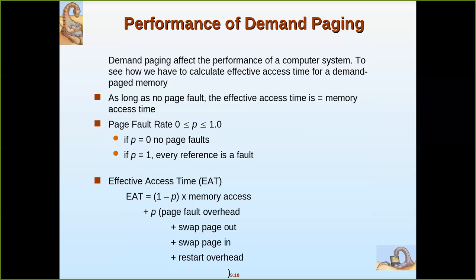Each time a page fault takes place, the page must be loaded from secondary storage into main memory, which definitely slows down the performance of demand paging. More page faults means reduced efficiency. However, once all pages are brought into main memory, there is no more secondary storage access — only main memory access — and speed improves. Demand paging affects the performance of a computer system, so we need to calculate the effective access time.